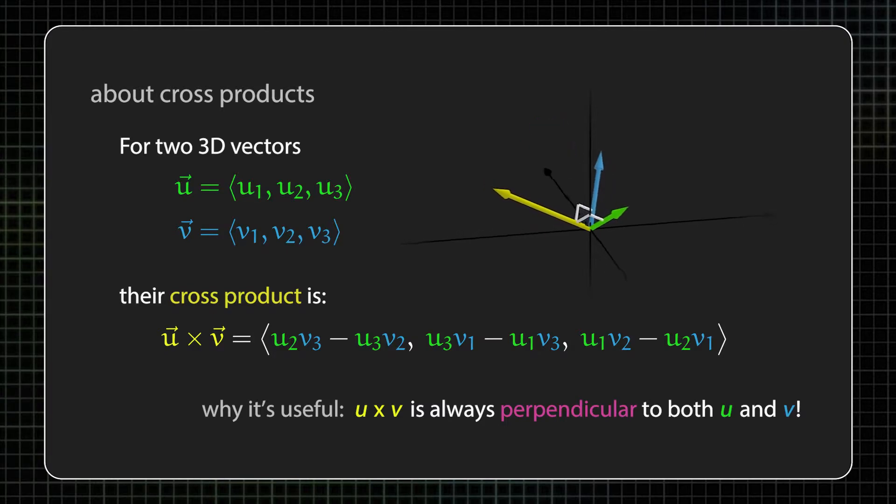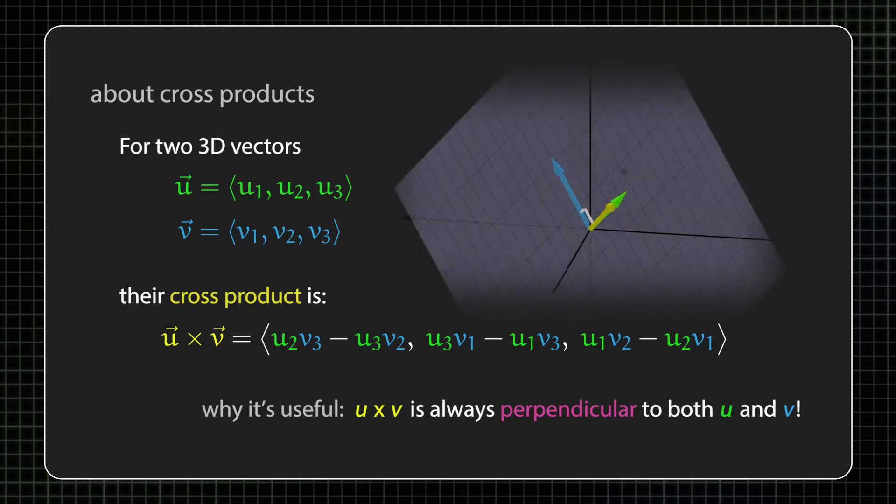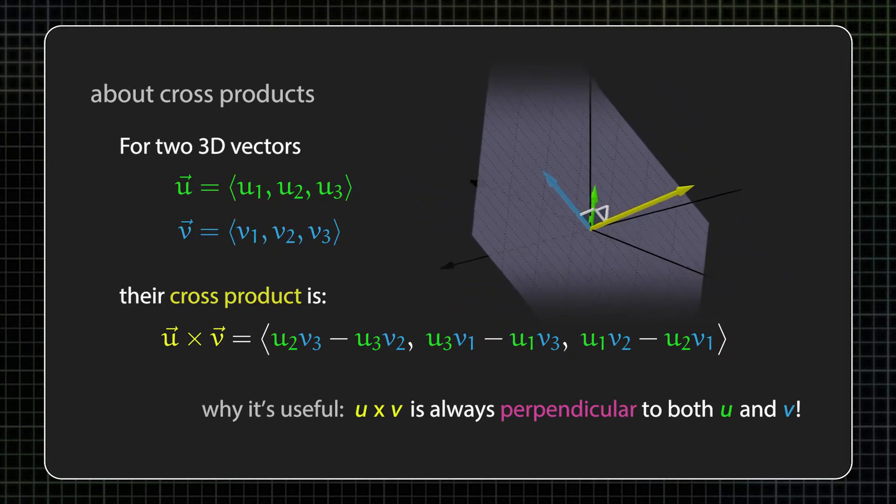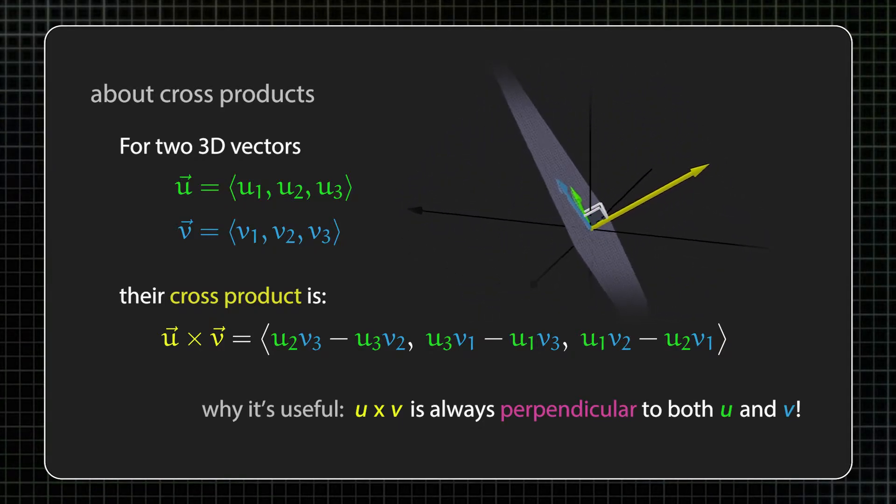The picture I usually have in mind for this is that if u and v are two vectors that are both parallel to a plane in three-dimensional space, then u cross v will be a vector that's perpendicular to the plane.